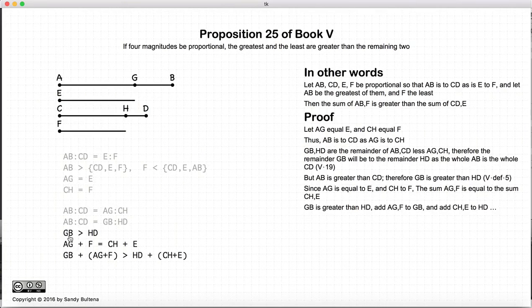So let's take GB is greater than HD and add the equality AG plus F to this side of the greater sign and CH plus E to that side of the greater sign, maintaining the relationship of greater than. So GB plus AG plus F is greater than HD plus CH plus E. Just reordering how we're grouping together the line segments, I have GB plus AG plus F is greater than HD plus CH plus E.